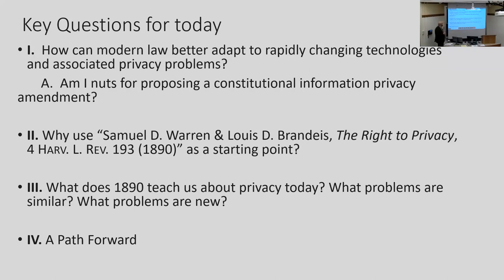Why use Warren and Brandeis' 'The Right to Privacy' from 1890 as a starting point? What does 1890 teach us about privacy today? What problems are similar? What problems are new? I actually think it's a great way to start a broad privacy discussion. This right-to-privacy article from 1890 is one of my assigned readings in my data privacy course. Lawyers and non-lawyers read this article all the time and are blown away at how relevant all the ideas are. So I highly recommend it.